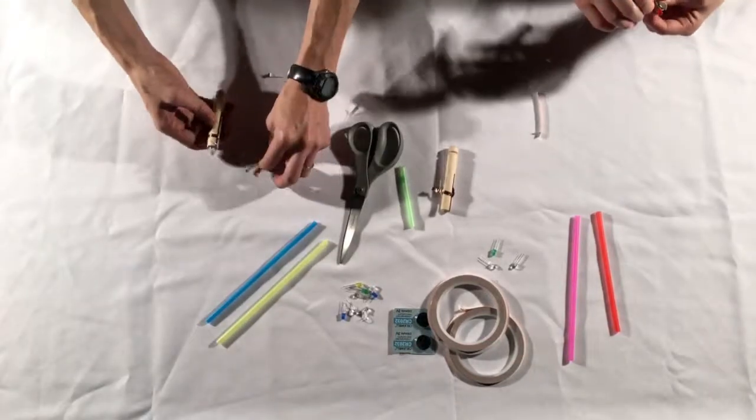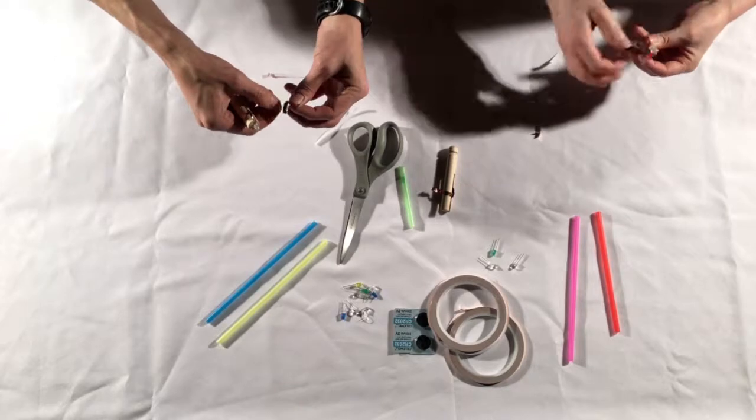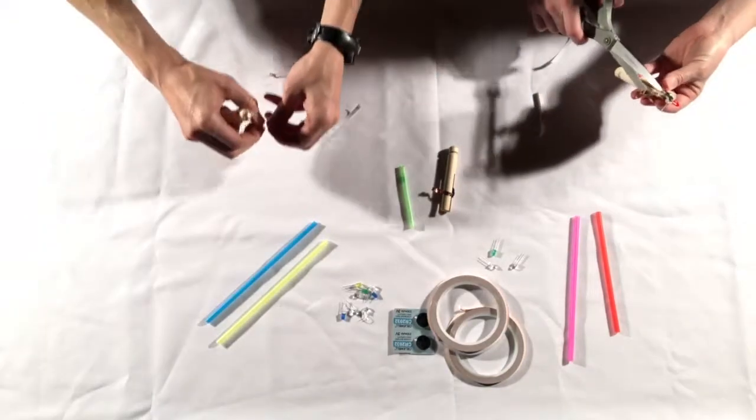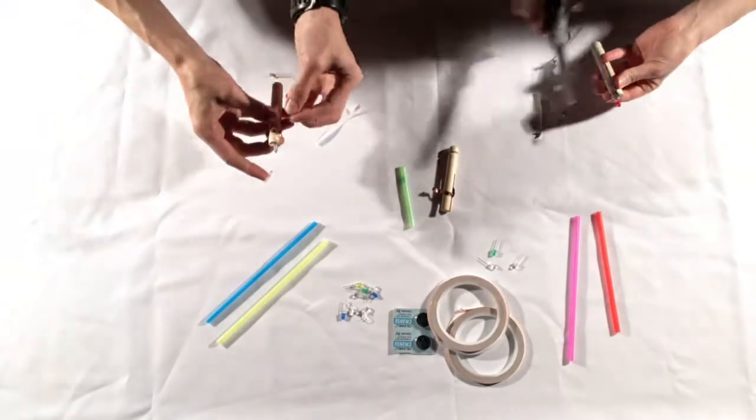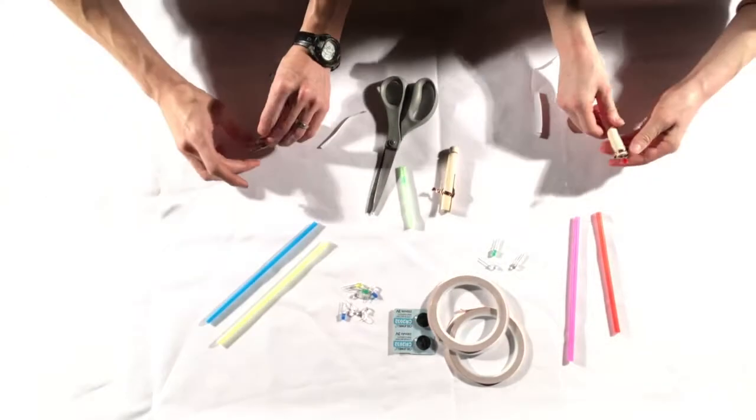To make a switch, you can take a chunk of copper tape and slide it underneath the LED leg. And then when you press the leg down on the copper, voila! Wow!